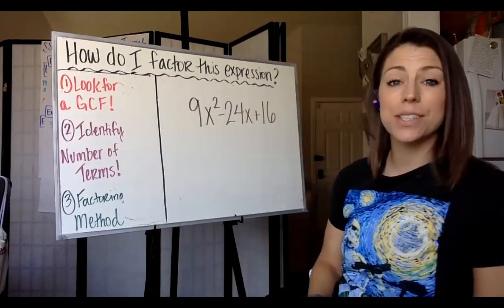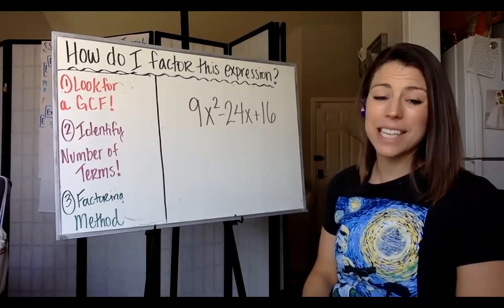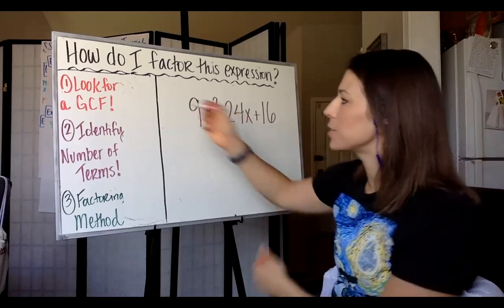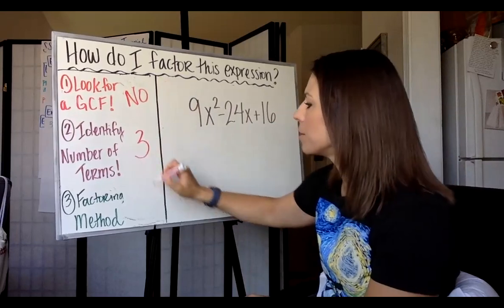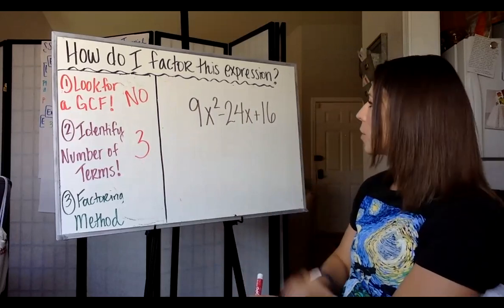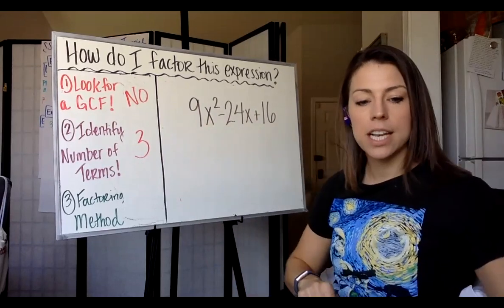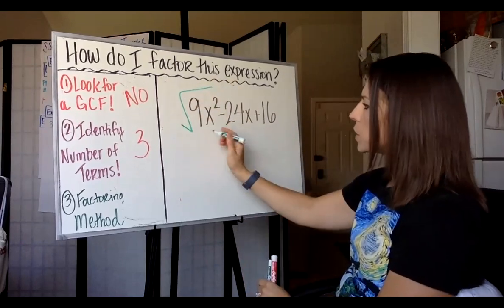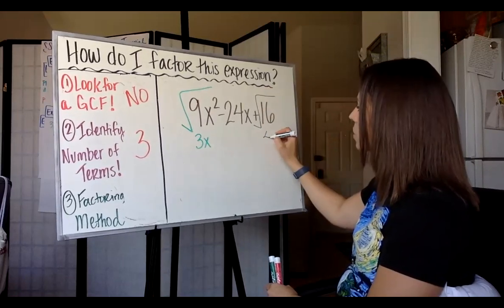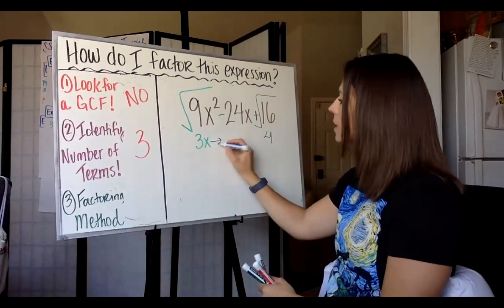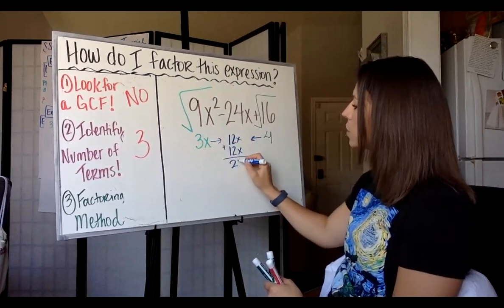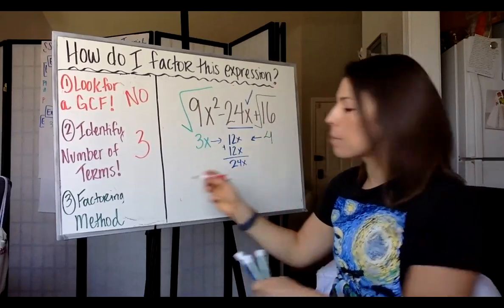Our final example is 9x squared minus 24x plus 16. There is no GCF since the factors of 9 don't go into 16 or 24. There are three terms. It does have a leading coefficient, so we cannot use P's and Q's. Let's check if it's a perfect square trinomial: the square root of 9x squared is 3x, and the square root of 16 is 4. Multiply them: 3x times 4 is 12x, and 12x plus 12x is 24x — that matches the middle term. So yes, this is a perfect square trinomial.